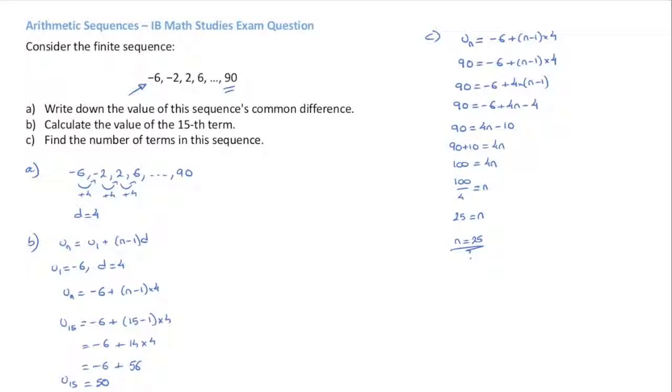And so what we've just shown here is that the final term, 90, corresponds to N being equal to 25. This means there are 25 terms in this sequence.